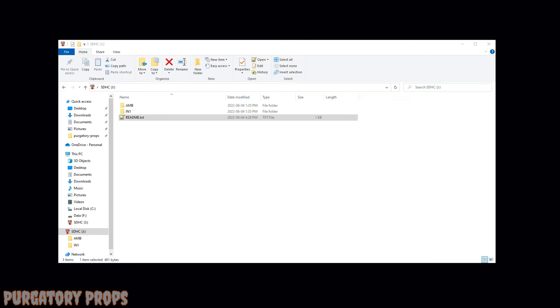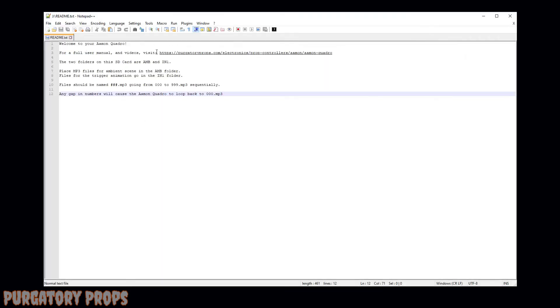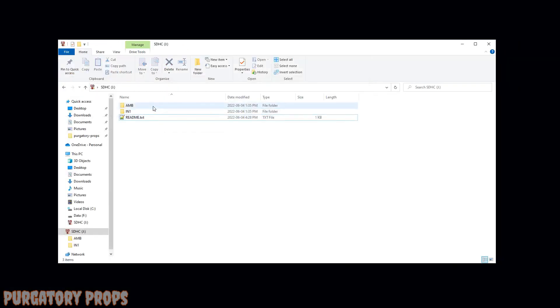When you get your Amon Quadro, it will come with a micro SD to full size SD card adapter. And you can use that to plug it into your computer to put on sounds. So when you get it, it'll look like this. You have a readme file, which just has some basic information, a link to our website where you can get the full user manual and all the videos. And then it'll tell you about the folders in there. You can read that, but I'm going to go ahead and walk you through it. There's two folders, AMB, which stands for ambient, and IN1, which stands for input 1. Since the Amon Quadro only has one input, there's only one folder. You can put as many files as you want up to 1,000 in here, but they need to be named correctly. They need to be 000.mp3 and then 001.mp3 and so on all the way up to 999.mp3.